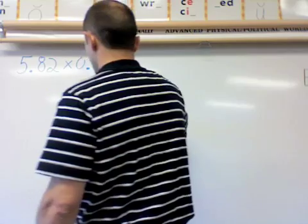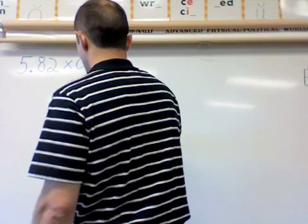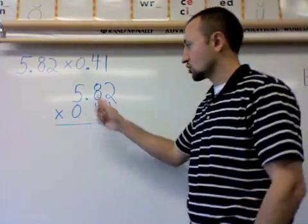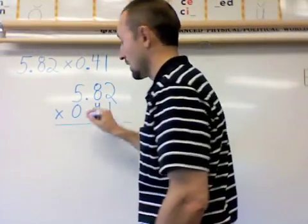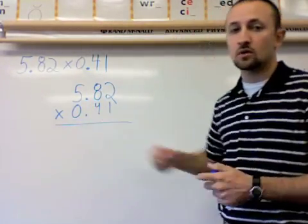5.82 times 0.41. And just like adding and subtracting decimals, I've got to make sure that they are lined up. Now here's the one major difference that's going to help me solve this problem.